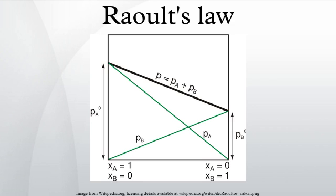Once the components in the solution have reached equilibrium, the total vapor pressure of the solution can be determined by combining Raoult's law with Dalton's law of partial pressures.